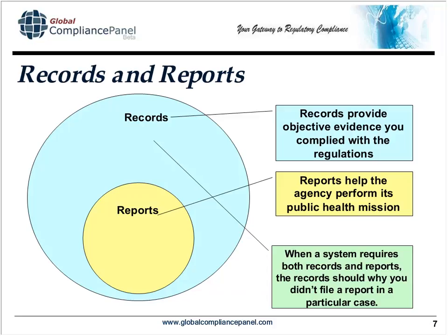Records and reports fit together in a particular way. Records provide the objective evidence that we've complied with the regulations. Reports help keep the agency informed to perform its public health mission. Reports are, in essence, some kinds of records — if you report something to the FDA, you're going to keep a record that you made that report. Sometimes the system requires both records and reports, but there are cases where you don't have to report, in which case you have to create a record explaining why you didn't have to report. We'll see that in corrections and removals: if you have one of the exemptions, you must keep specific records including the reasons why you didn't have to notify FDA.